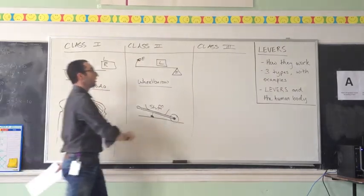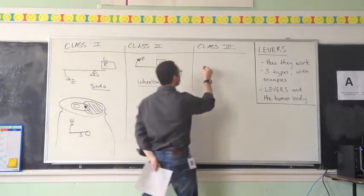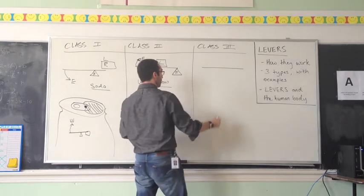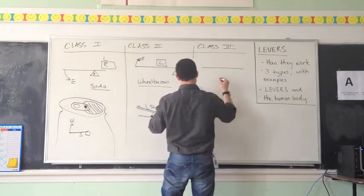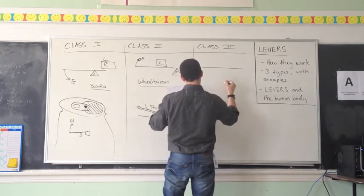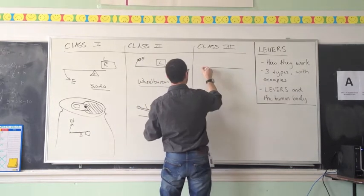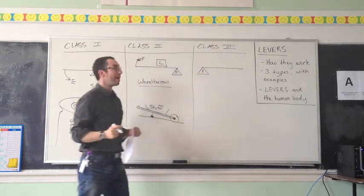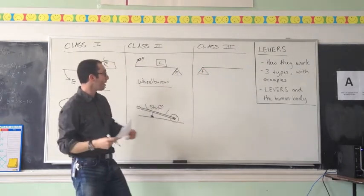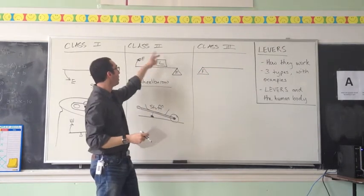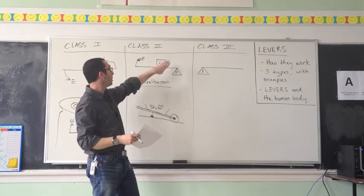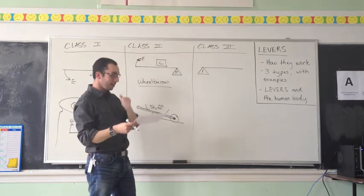Let's take a look at the class three lever. With the class three lever, the fulcrum is going to be at one end. Let's figure out how we can place our load and our effort. Here, the effort is in the middle of the lever, and the load is on the far end.